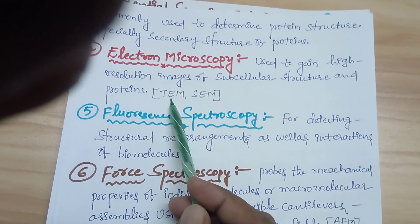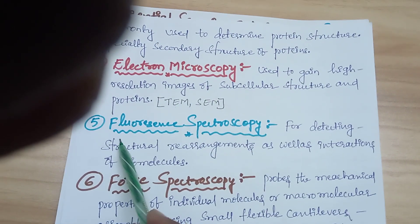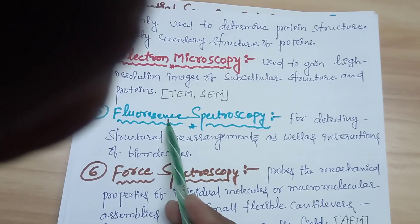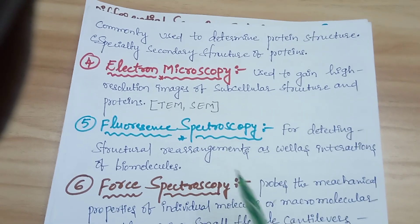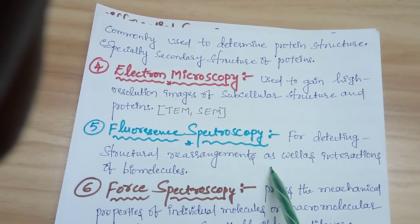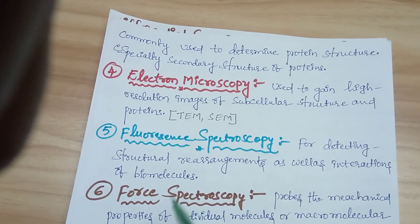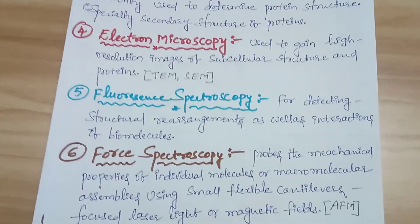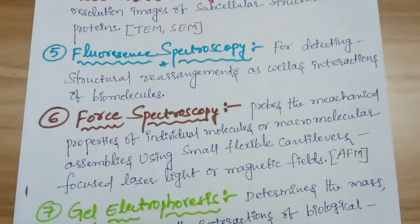The best examples of electron microscopy are SEM and TEM. The fifth biophysical technique is fluorescence spectroscopy, which is used for detecting the structural arrangement as well as the interactions of biomolecules.